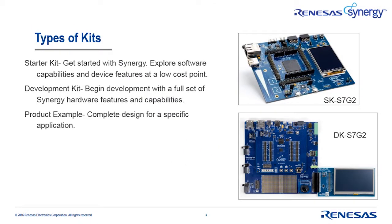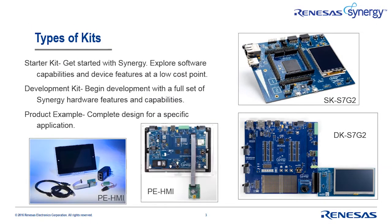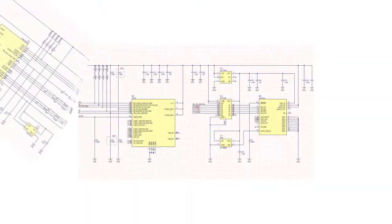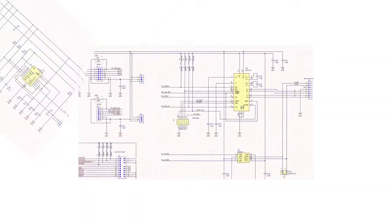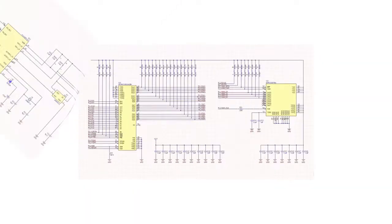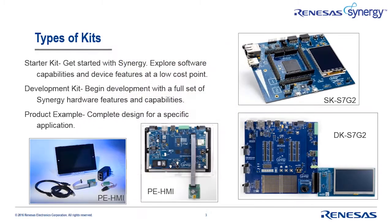A product example is a complete design in a form factor that's appropriate for an end application. Product examples come with a complete bill of materials, schematics, layout files, and even a design journey document that describes why specific choices and trade-offs were made during the design. Data sheets for each of the components in the kit are even included to save you the time of searching for them yourself.